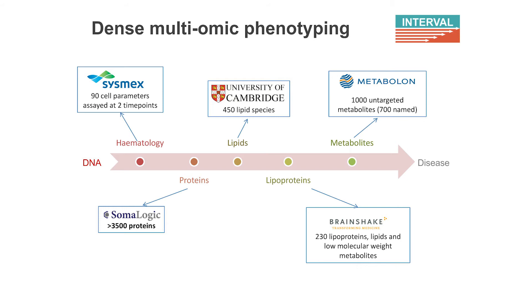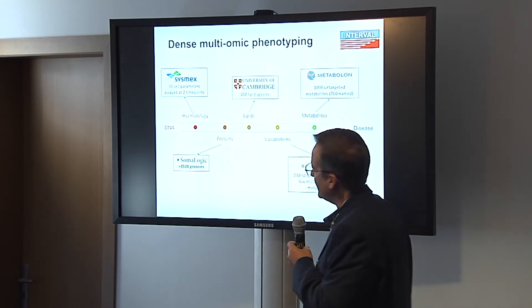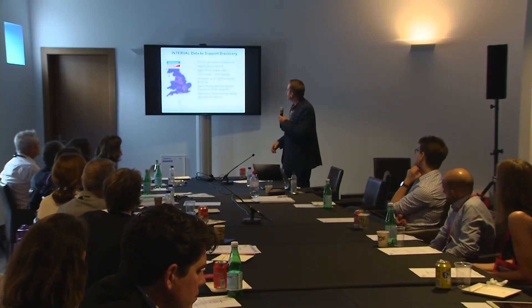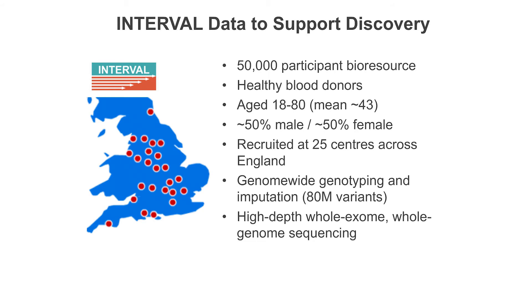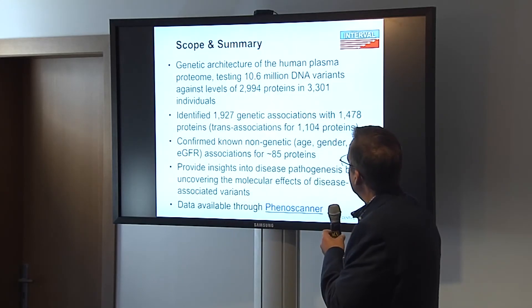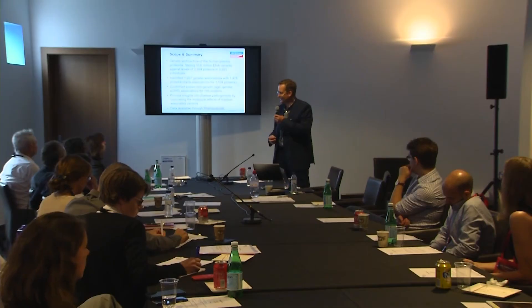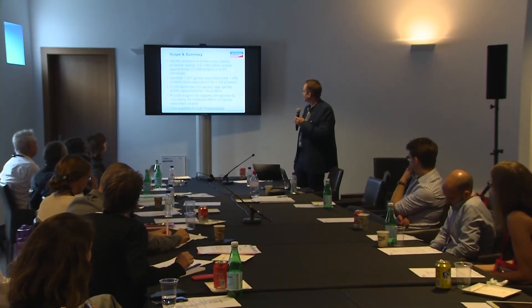SomaScan data has been used in building additional data resources in something called the Interval Project. SomaScan data has been collected as an intermediary phenotype along with a whole range of other intermediary phenotypes, done in healthy blood donors, which is still useful for deconvoluting biology. There are a certain number of genetic associations with protein measurements based on SomaScan which will be made available through Phenoscanner. This is currently in publication — not yet finalized — but it will be a SomaScan database resource that we can use for deconvoluting biology.